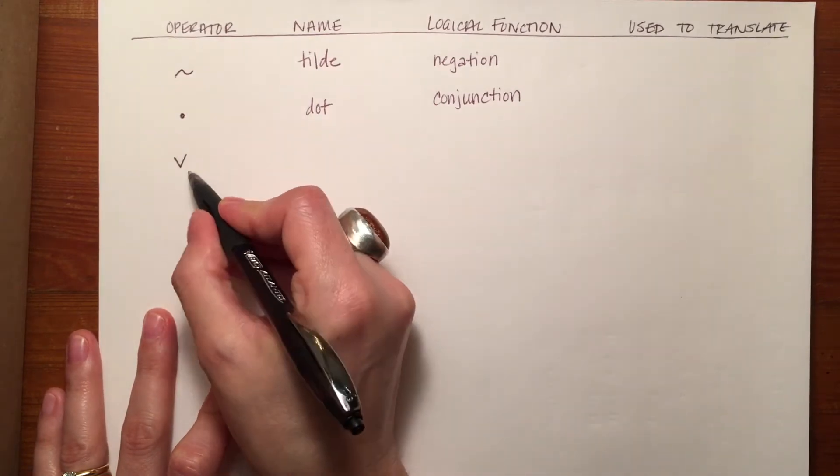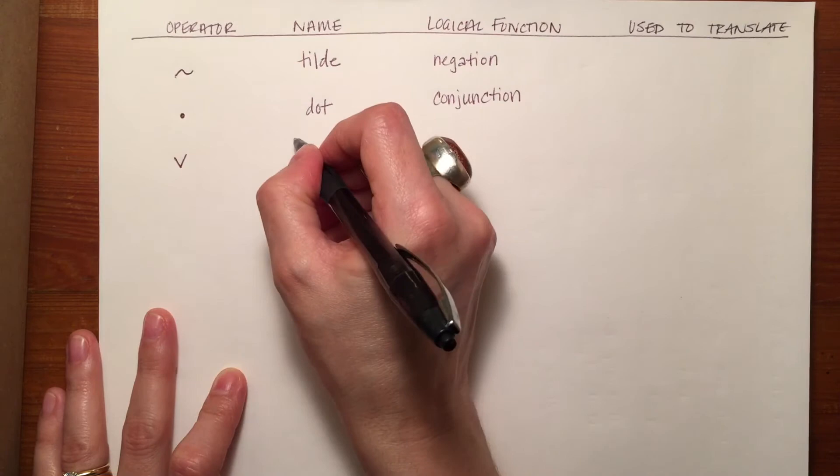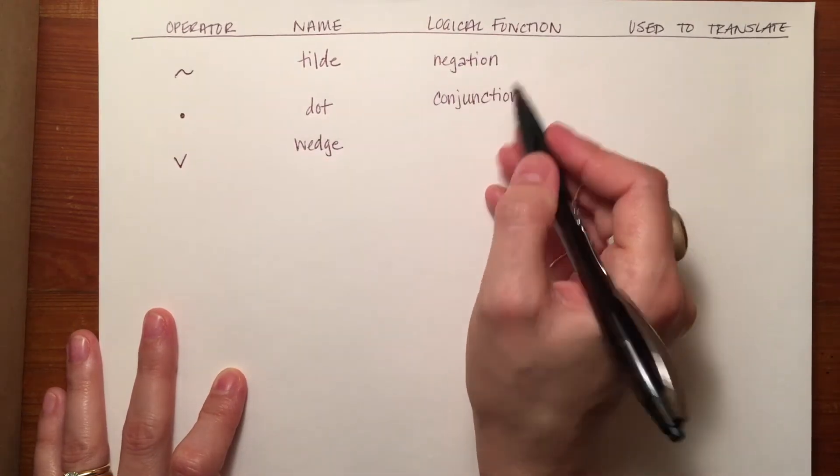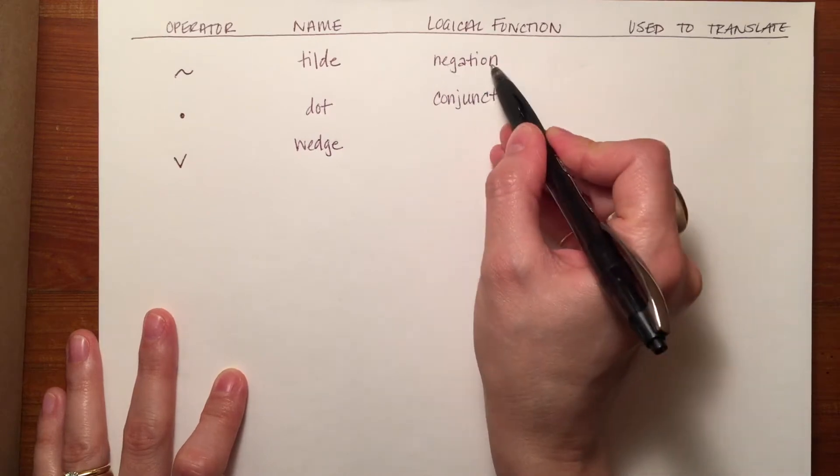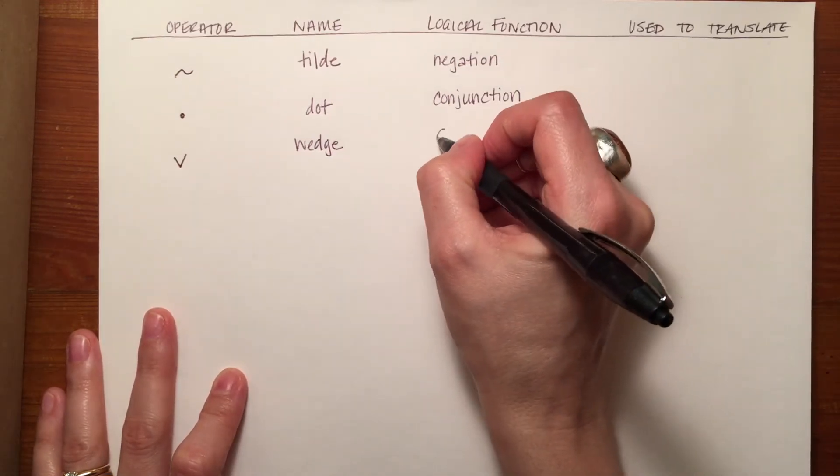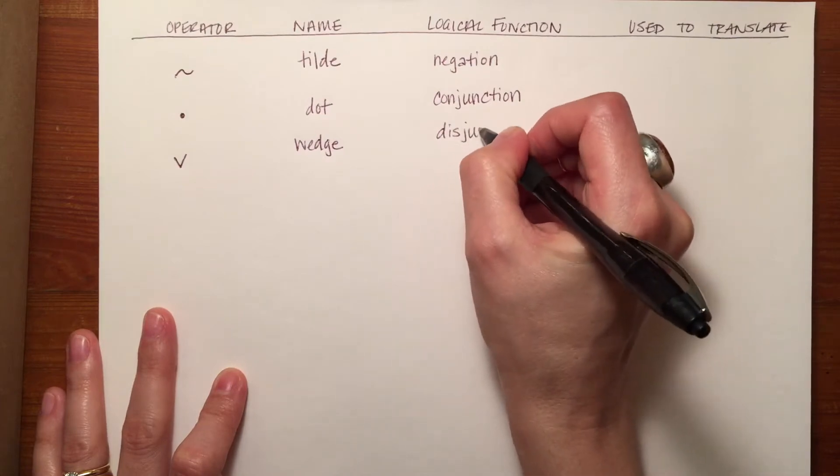The third symbol is this little v, and it's called the wedge. Its logical function is not making things the opposite or bringing them together, it's putting them apart. Disjunction.